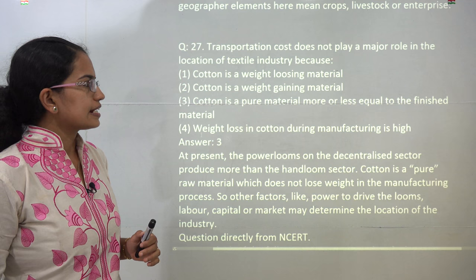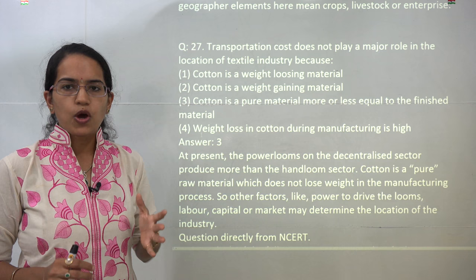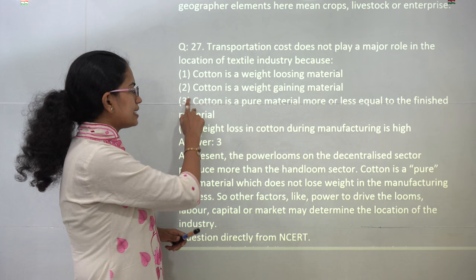The next question talks about the cotton textile industry. Cotton textile is a unique industry because in cotton textile, the weight of the raw material and the finished product remains more or less the same, and therefore it is considered a pure material. This question is directly from NCERT, so if you have thoroughly covered NCERT 11th and 12th, these kinds of questions should not be a problem. The correct answer here would be 3.